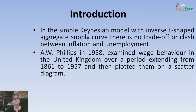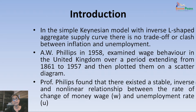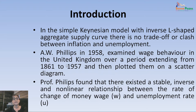What did this scatter diagram show? It showed that there was a stable but inverse relationship between the rate of change of money wages — that is the nominal wage rate — and the unemployment rate. These two variables were related to each other in a non-linear but inverse fashion. In simple words, after plotting almost 100 years of UK data, he found an inverse relationship between the rate of change of nominal wages and the rate of change of the unemployment rate.